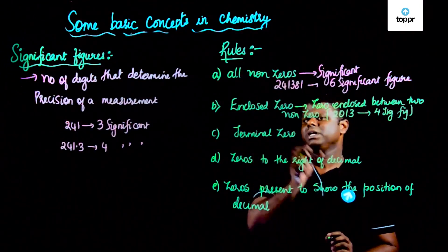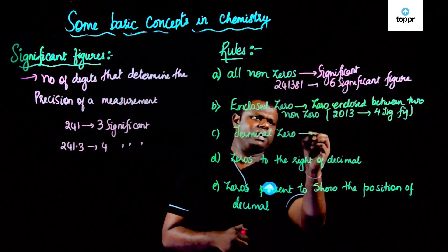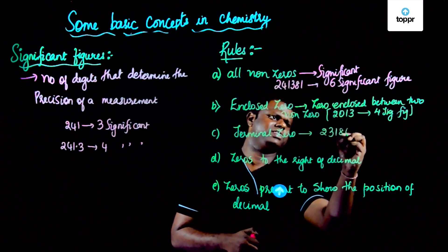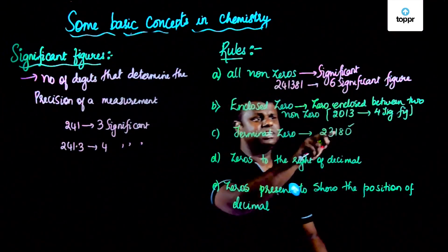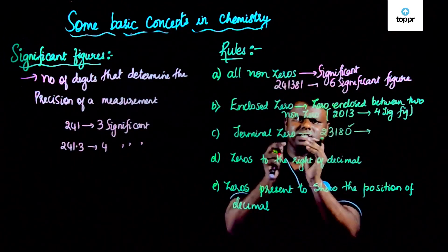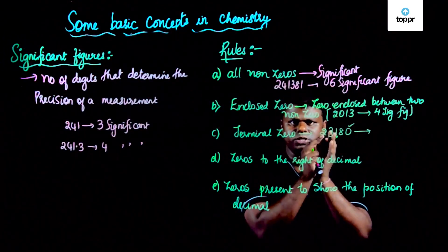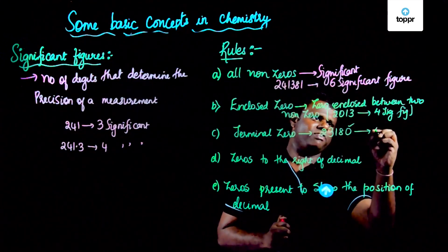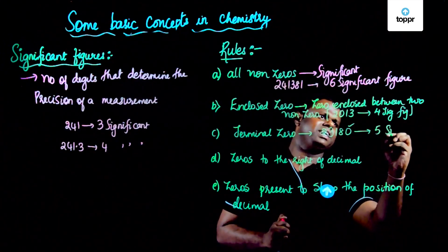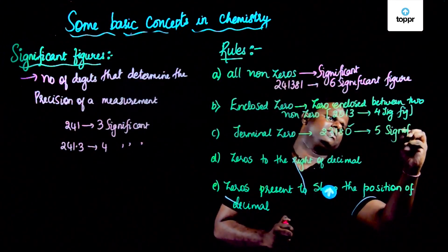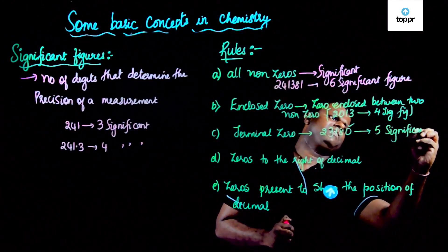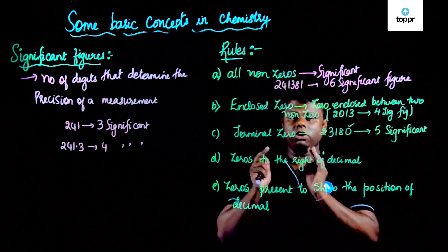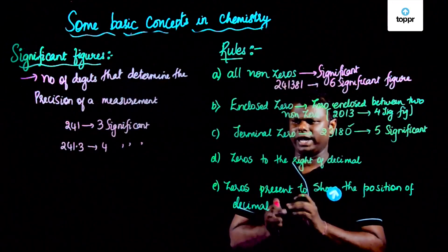Terminal zero is significant. For example, if I have something like 2, 3, 1, 8, 0 — if you can see here, this is a terminal zero. So when I talk about the value, this is a five-digit number, and it has five significant figures. But not all terminal zeros — we'll be studying why.